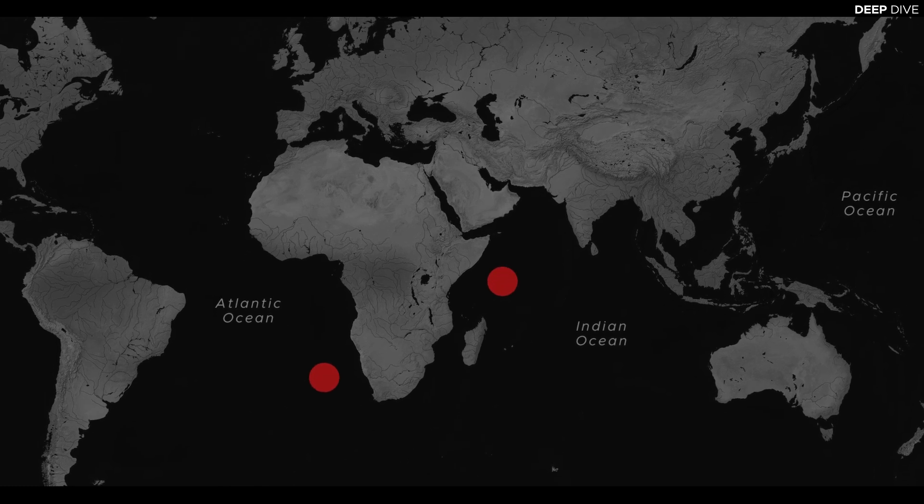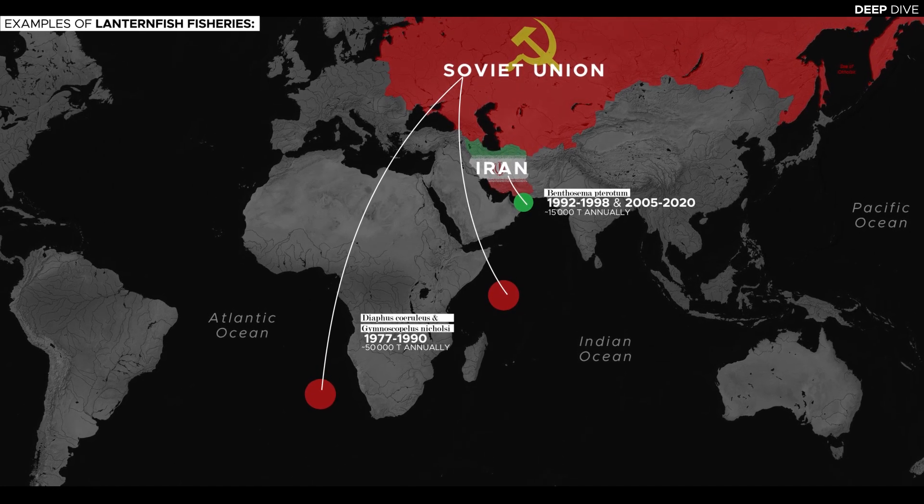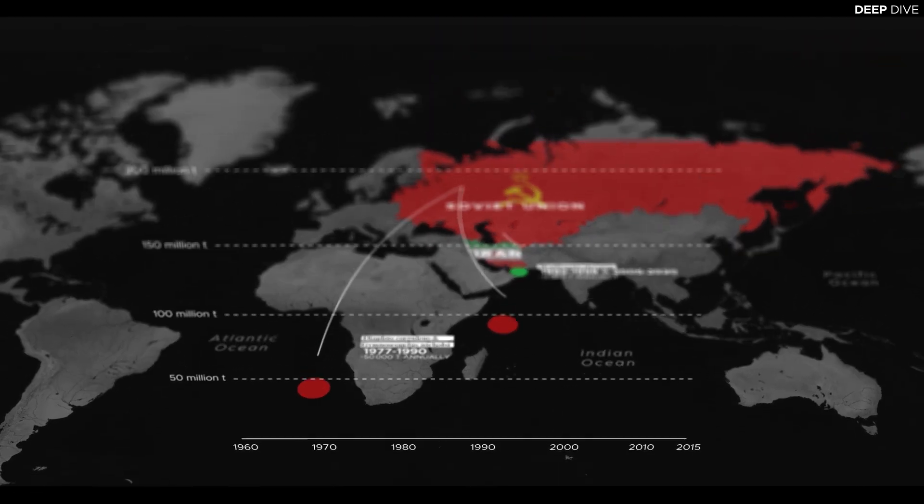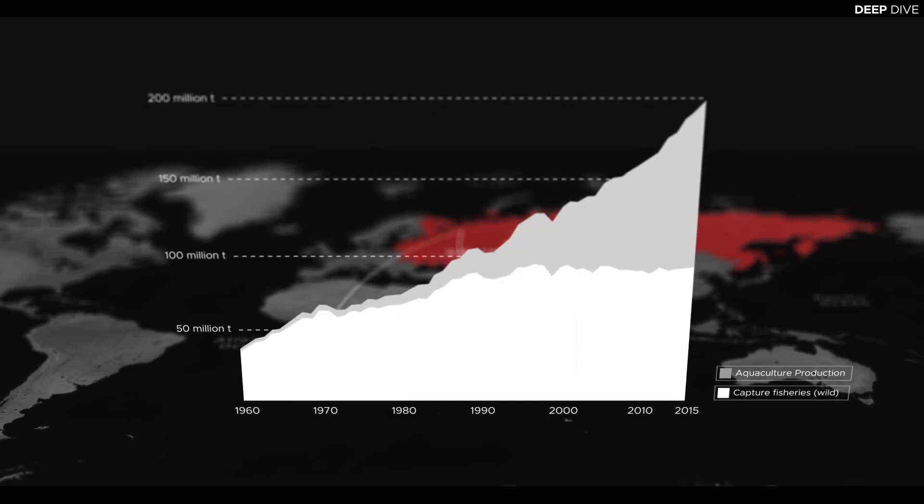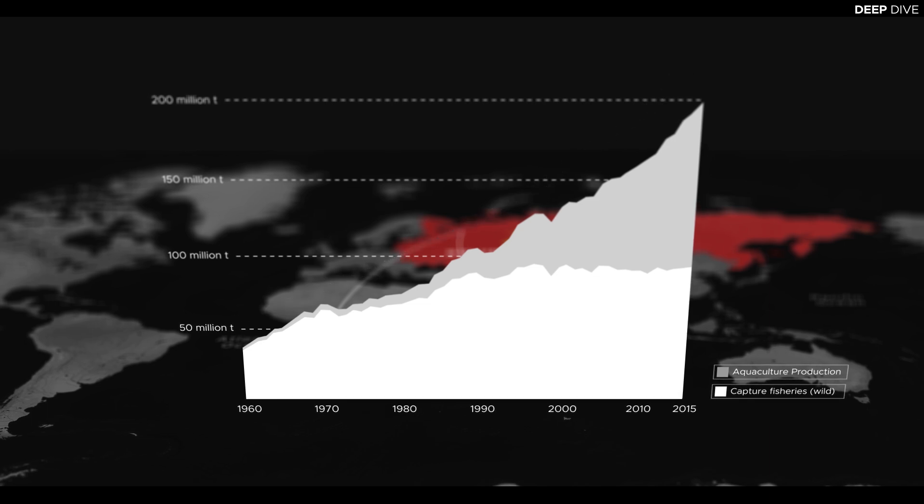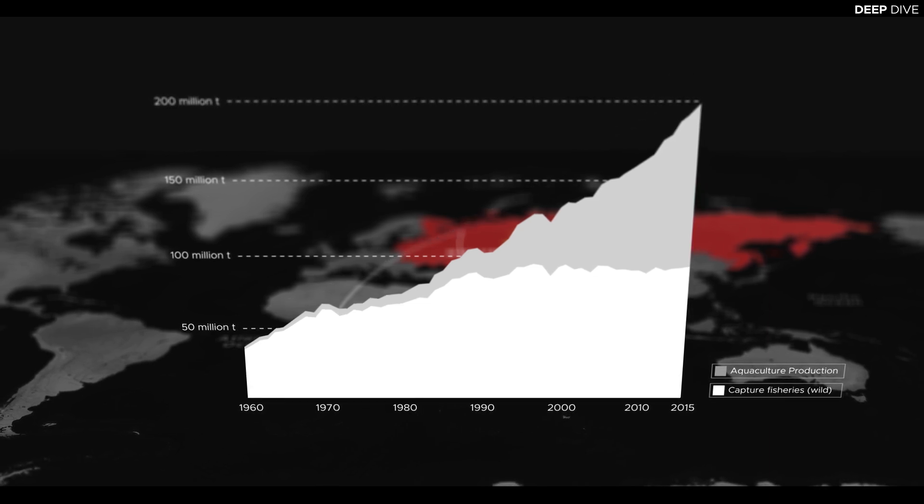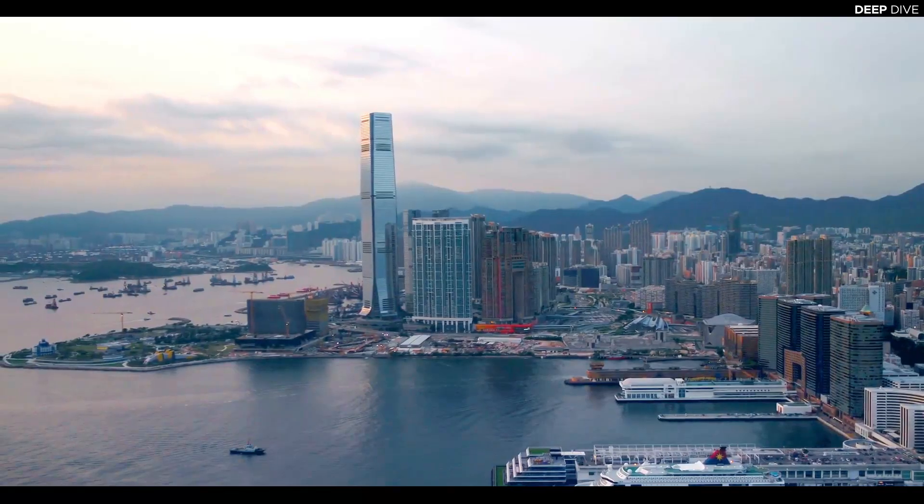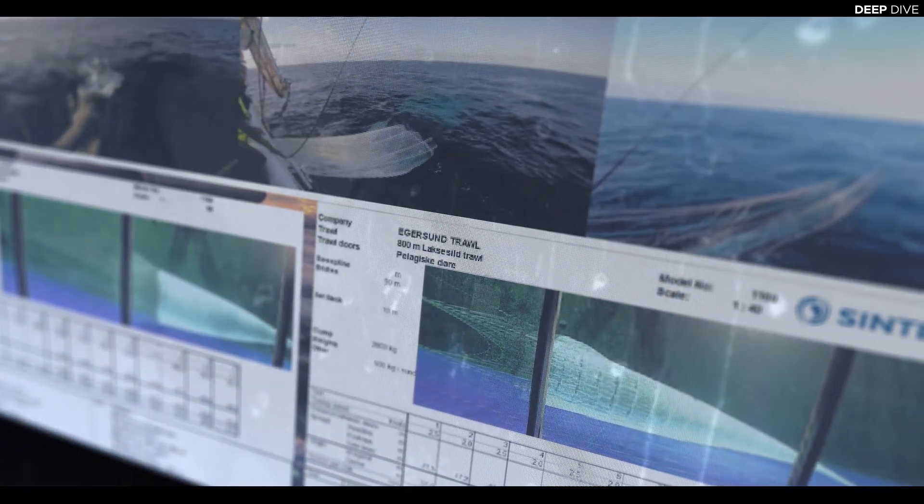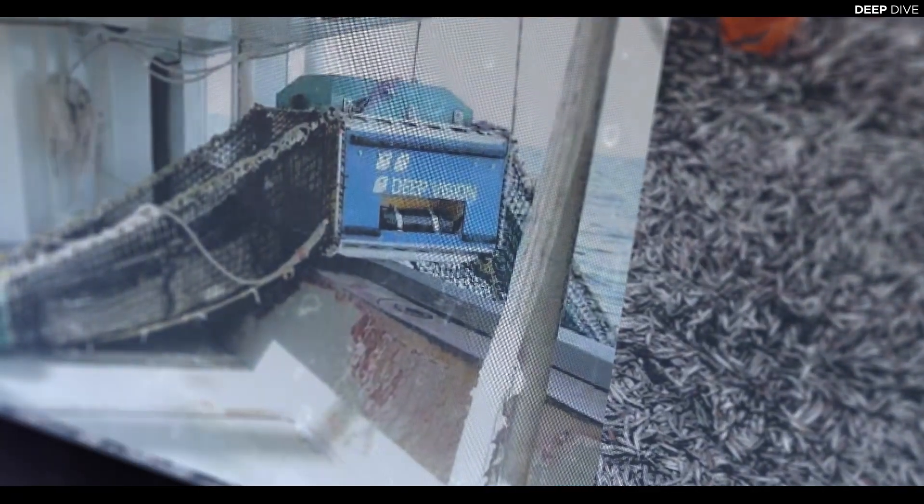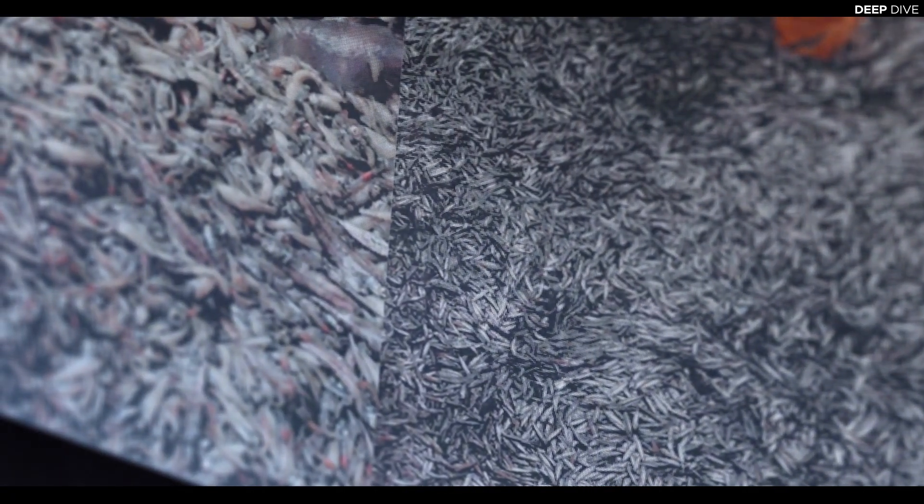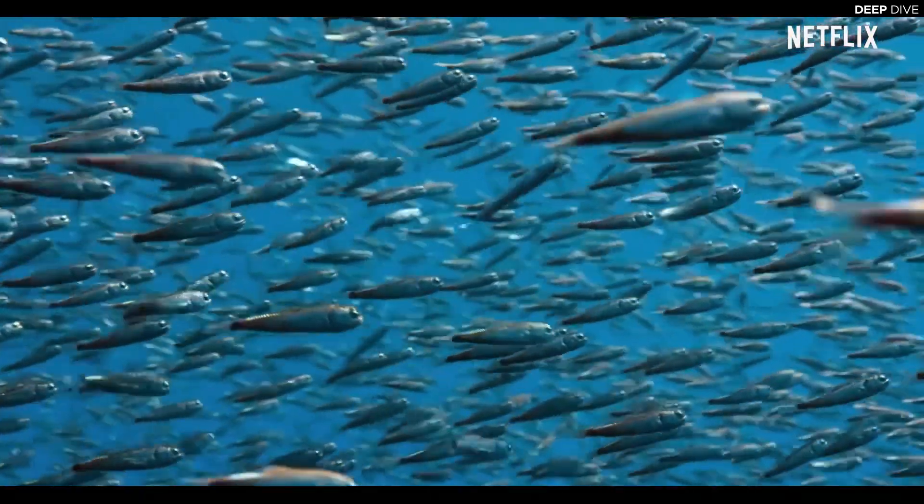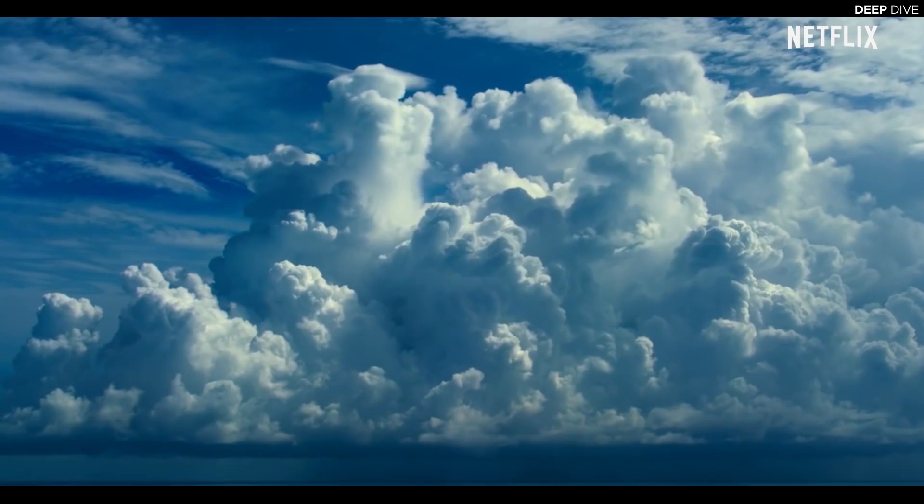While mesopelagic fisheries are currently still rare, and those specialized on lanternfish even more so, mostly due to significant technological and economical hurdles, this could quickly change. Despite shrinking fish stocks, the demand for marine protein is constantly rising, which makes the large unexploited resources found deep in the ocean more and more attractive each year. Numerous experimental fisheries are currently being set up around the world, and many more will likely follow. Our growing population and the worsening climate that already threatens farmland on a global scale make a large-scale exploitation of these untapped resources almost inevitable. But this fish stock is unlike any other, which makes the exploitation of this community a high-stakes game that, if not done sustainably, could have consequences that extend far beyond the surface of our oceans.